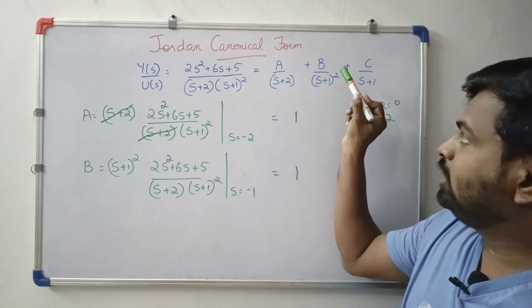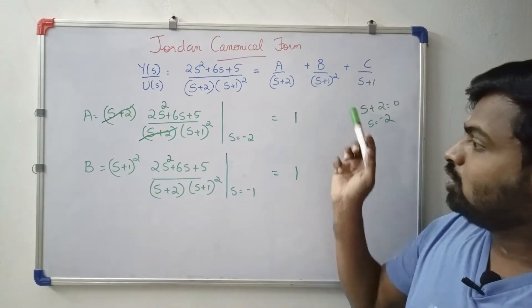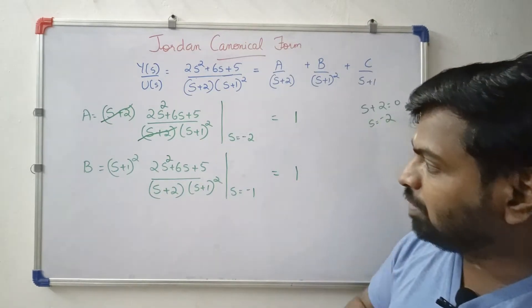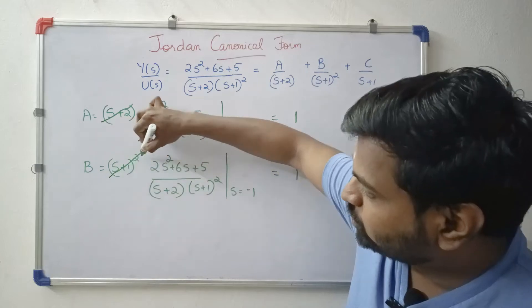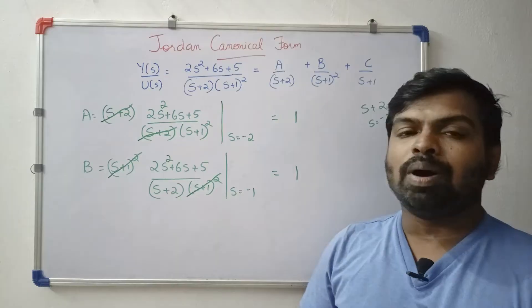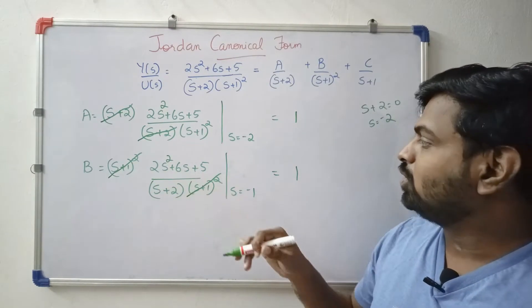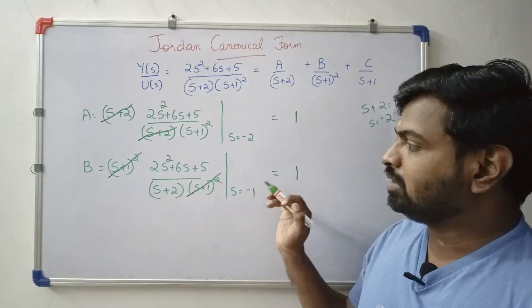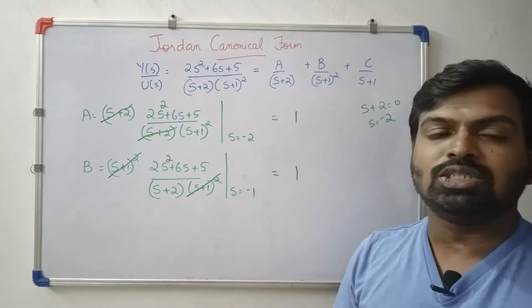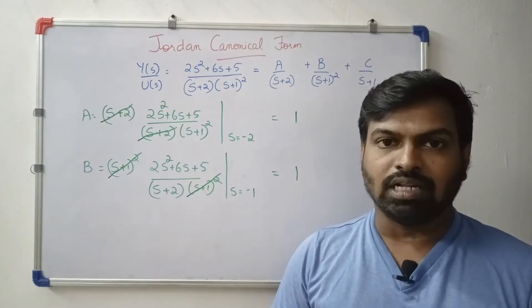To find B, we multiply the transfer function by (s+1)² and set s = -1. Substituting s = -1 into the expression with s+2, we evaluate to find B.